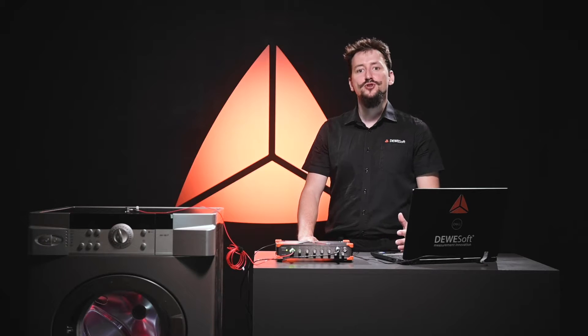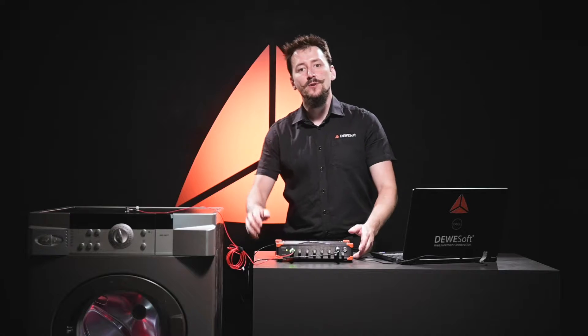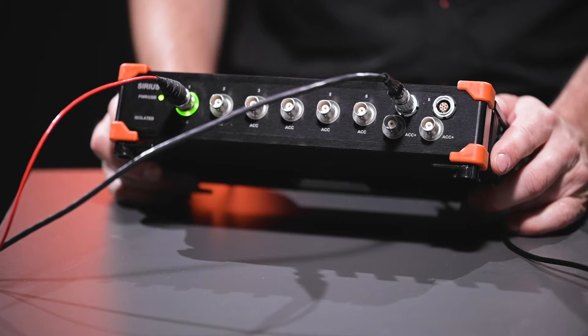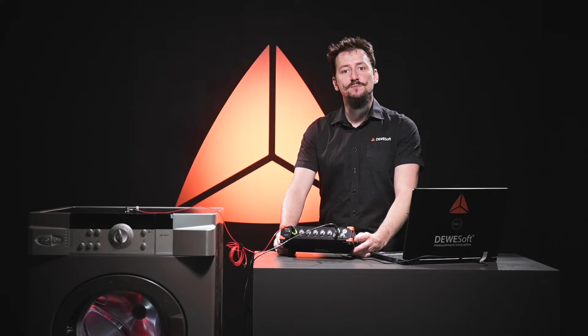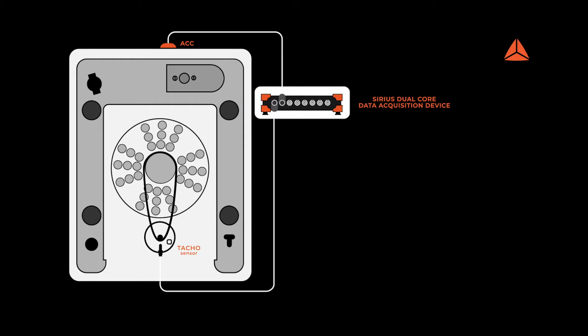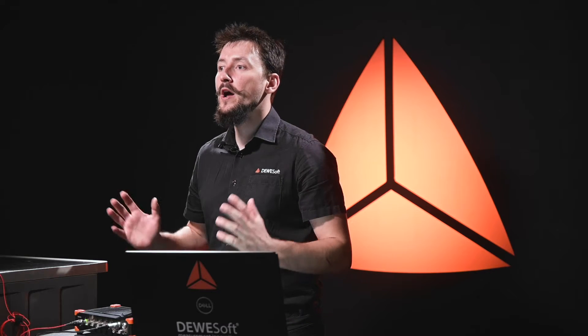For a simple measurement setup, an accelerometer is mounted on the machine chassis and connected to the data acquisition device with 24-bit and 200 kilo samples per second recording rate. You can use a TAHO or almost any other type of sensor, such as gear tooth, tape sensor, encoder, or any other. Although the software offers a wide range of features, a simple measurement can be done in seconds.